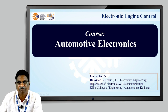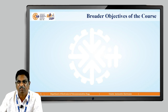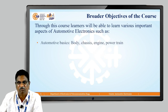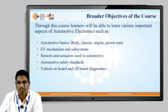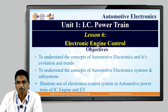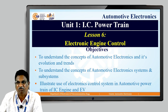This is our next chapter. These are the broader objectives of our course: automotive basics, EV mechanisms, sensors, actuators, then automotive safety standards and on-board and off-board diagnostics. Today's agenda covers Electronic Engine Control — to understand the concept of automotive electronics and its evolution, to understand the concepts of automotive electronics systems and subsystems, then illustrate the use of electronics control system in automotive power train of IC and EV.